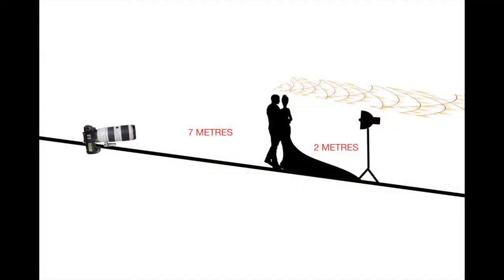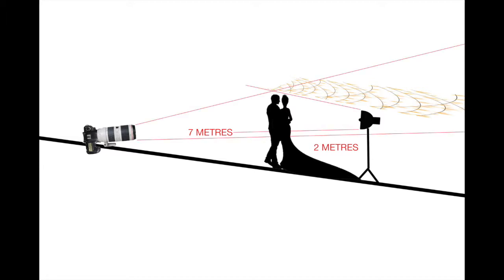If you want to shoot a backlit photo with a couple, what you would want to do is position your flash behind the couple and set the height to about the groom's head height, or the male's head height. Then with the distance behind the couple, if you've got a groom that's about six foot, you'd put the flash about six foot behind the couple.